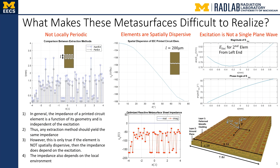So what makes these metasurfaces difficult to realize? First, they're not locally periodic. The environments that the metasurface elements are in are not locally periodic, so the traditional approaches of sheet impedance extraction from printed circuit elements assuming local periodicity do not apply. We know that in general, the impedance of a printed circuit element is a function of its geometry and is independent of the excitation. Thus, any extraction method should yield the same sheet impedance for a given printed circuit element. However, this is only true if the element is not spatially dispersive — then the impedance does depend on the excitation.